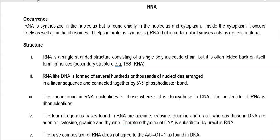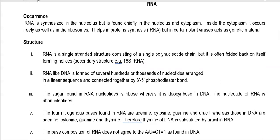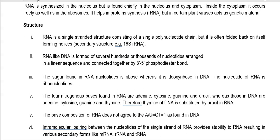Now we look at the points related to the structure of RNA. RNA is a single-stranded structure consisting of a single polynucleotide chain, but it often folds back on itself forming helices — that is a secondary structure. We have seen many points related to the stem and loop configuration and how RNA forms into various types of secondary structures, especially in rRNA as well as the tRNA molecule.